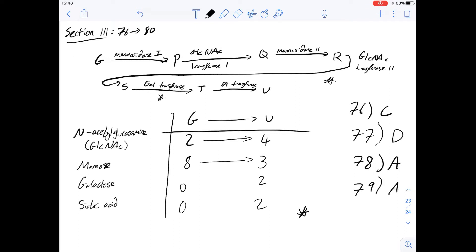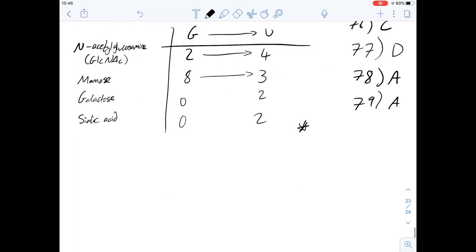And then finally if we look at number 80 it says which of the following is most likely and it speaks about which tube contains which cisternae. So the Golgi apparatus have lots of different layers like this and moving along the pathway things move along the cisternae like this.